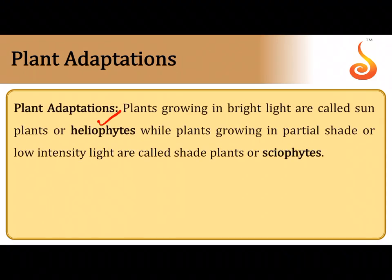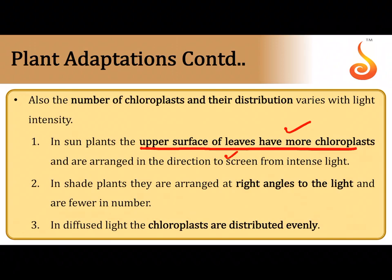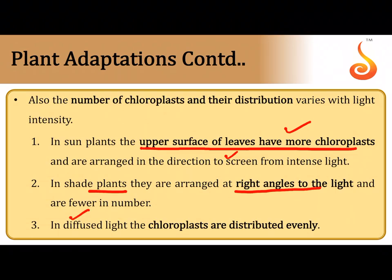Plant adaptations: plants that love a lot of sunlight are called heliophytes; those that cannot tolerate too much sunlight and love shade are called sciophytes. In most leaves the upper surface has many chloroplasts oriented in the direction of sunlight so that intensity does not become too great. In shaded plants, the longer axis of the chloroplast is at right angles to the incident light so they get maximum sunlight. In diffused light of moderate intensity, chloroplasts become evenly distributed.